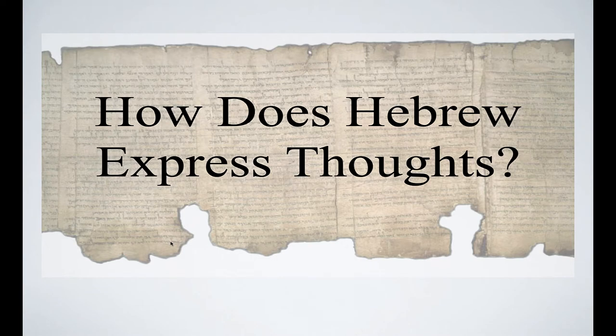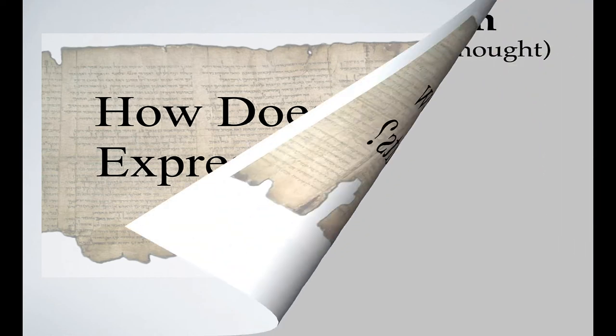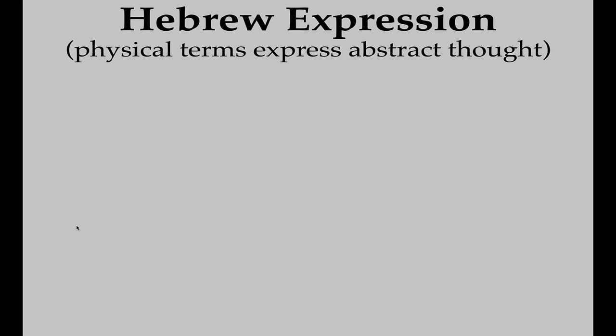Now we're going to move from words to thoughts. We've dealt with the alphabet, the letters, and the words. Most importantly, we want to talk about how Hebrew expresses thoughts. One of the big things about Hebrew, as opposed to Greek, is that Hebrew tends to use physical terms or physical words to express abstract thought. Greek by contrast is much more philosophical — perhaps derived from classical Greek, the language of the ancient Greek philosophers. Hebrew tends not to be abstract; it uses physical words to express an abstract idea.